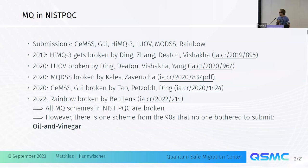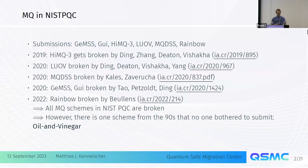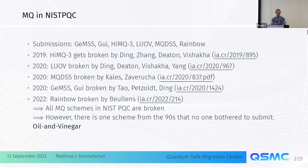What's even more unfortunate is that no one bothered to submit a scheme that has been around since the 90s and is not broken — and that's Oil and Vinegar, Unbalanced Oil and Vinegar. All the submission teams had more advanced constructions which looked very good with much better performance characteristics, but unfortunately they're all broken. That's why we come back to Oil and Vinegar.